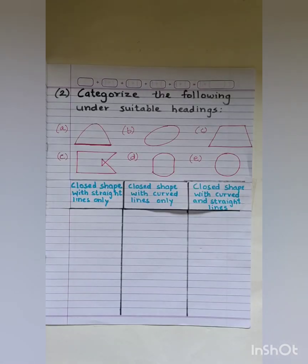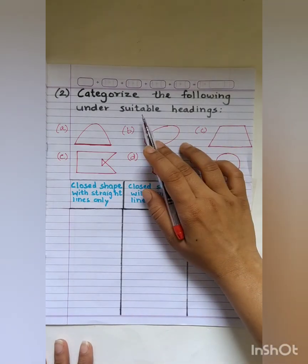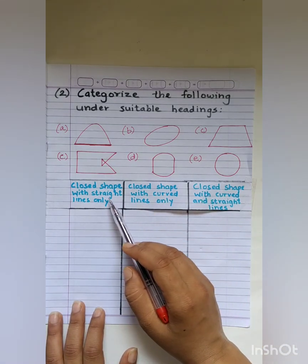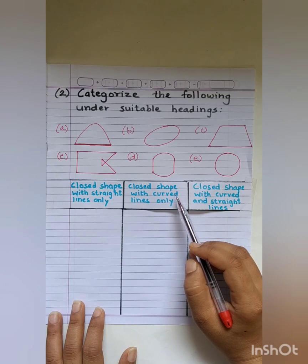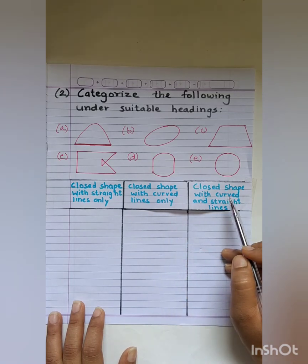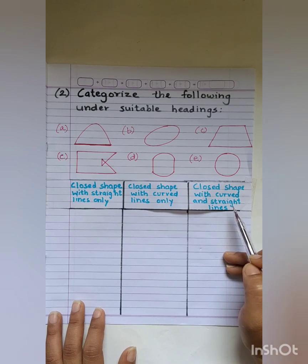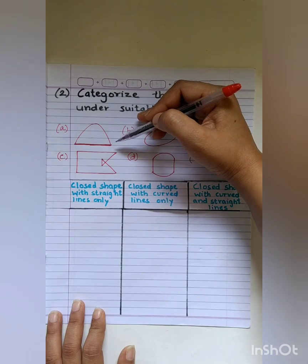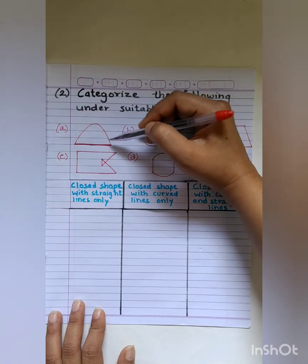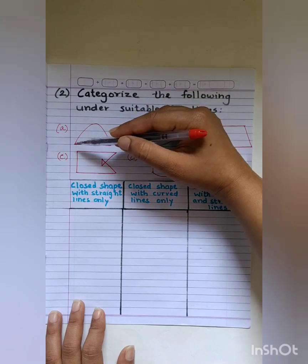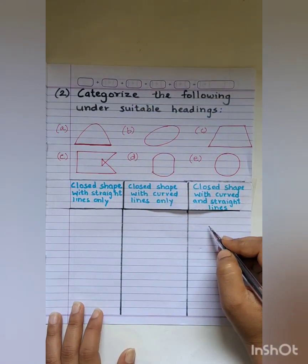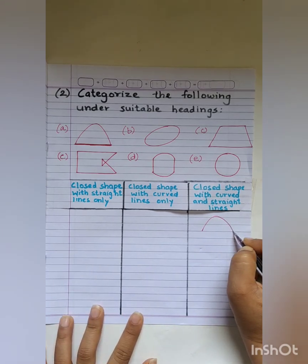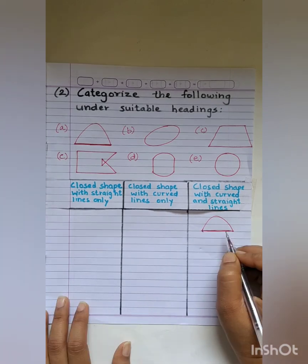Now let us begin with the second heading: categorize the following under suitable headings. The headings are: closed shape with straight lines only, closed shape with curved lines only, and closed shape with curved and straight lines. Looking at the first figure, it has a straight line at the bottom and a curved line on top, so we will draw this figure under both curved and straight lines.